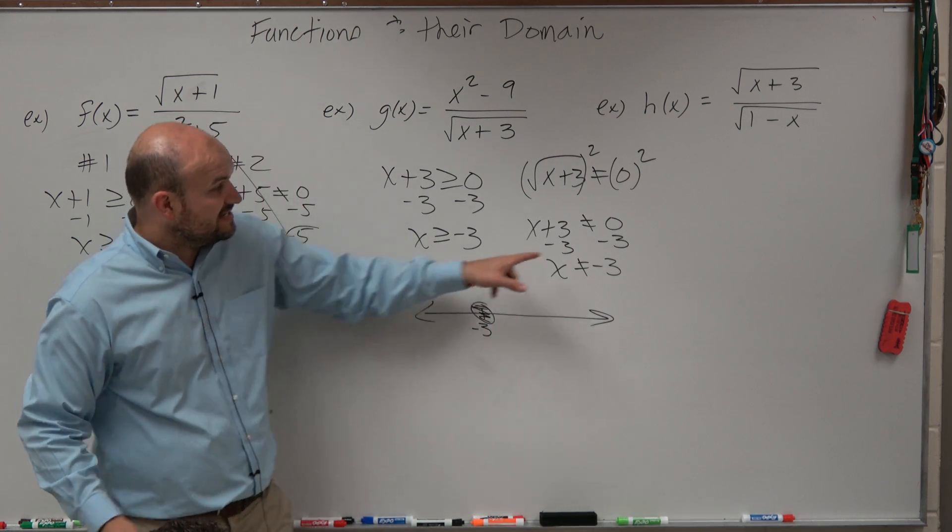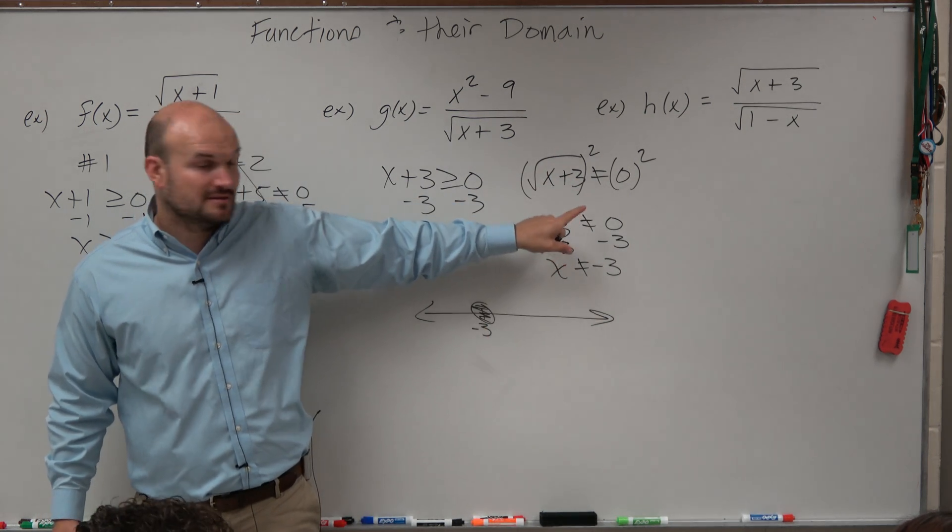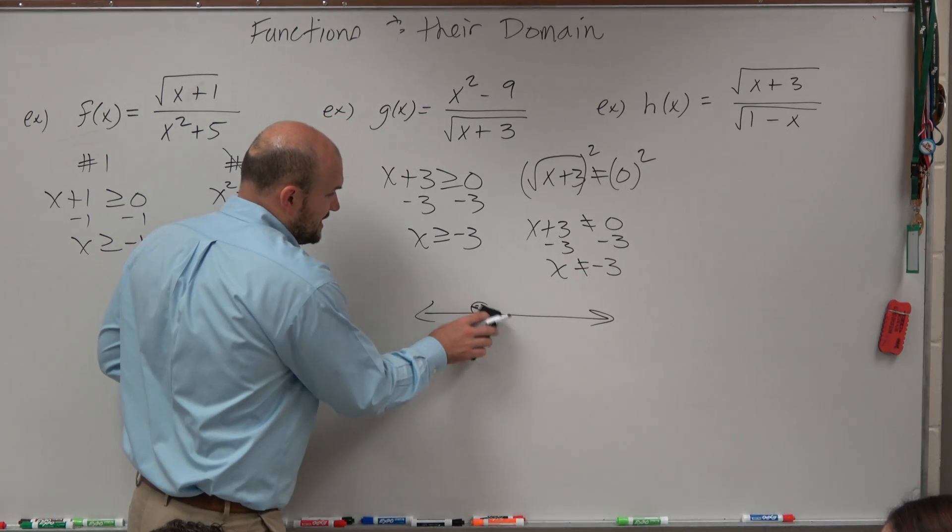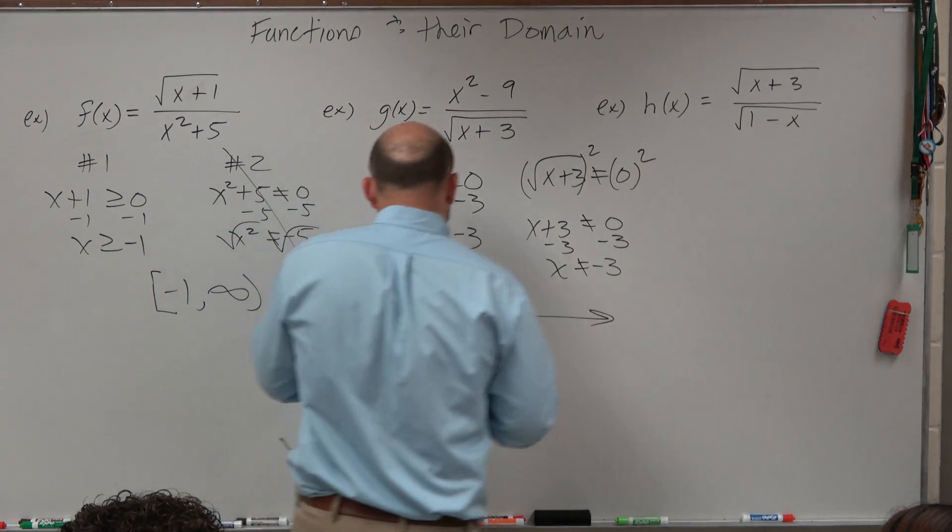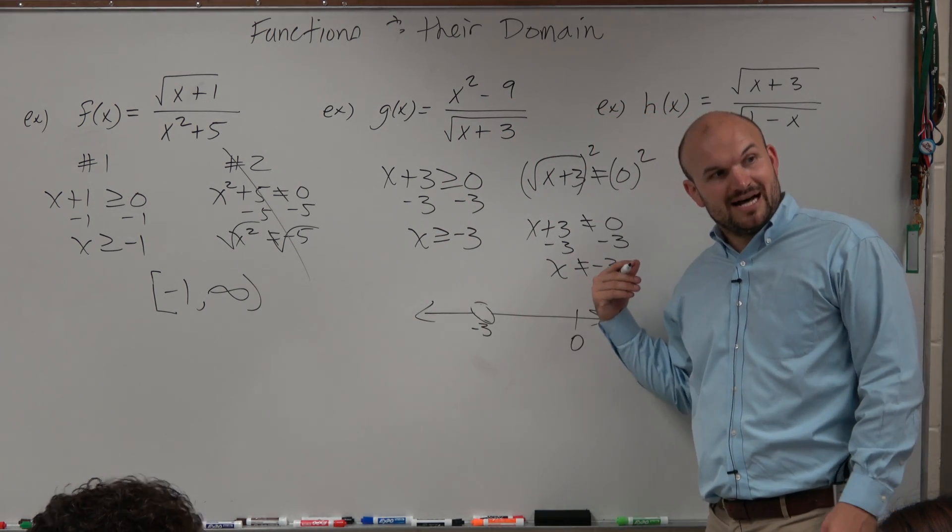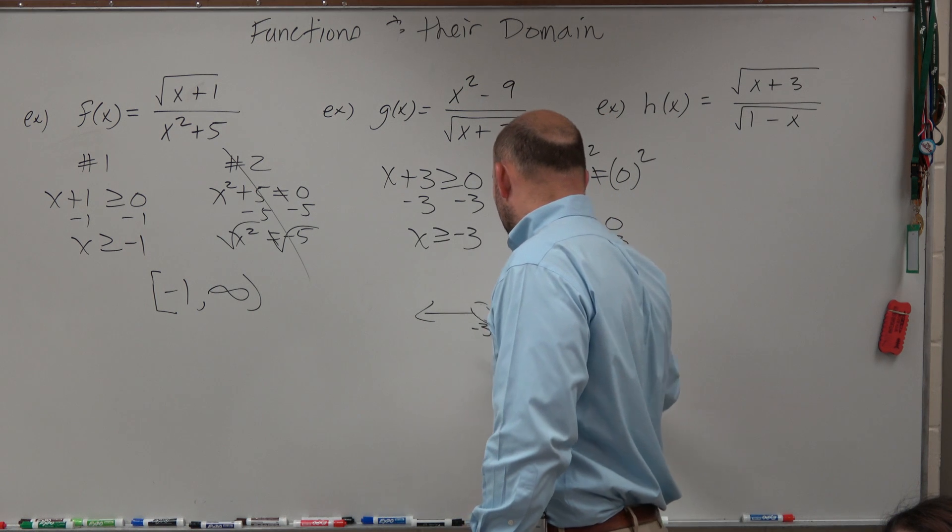But what does my other constraint say? It's not included. So it's going to be not included, and it's going to be all values that are greater than negative 3. Well, if 0 and positive numbers are to the right, that's going to be greater than.